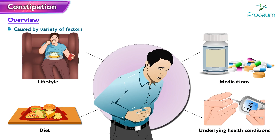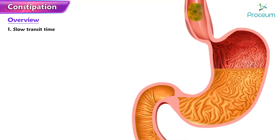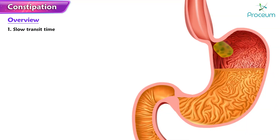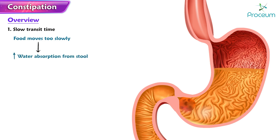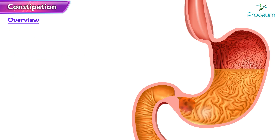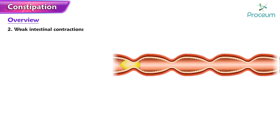One: slow transit time. Constipation can occur when food moves too slowly through the digestive tract. This can lead to increased water absorption from the stool, making it harder and drier.